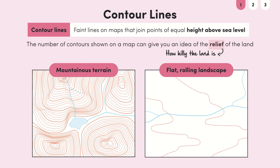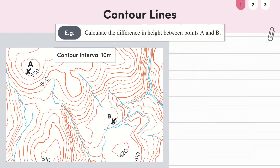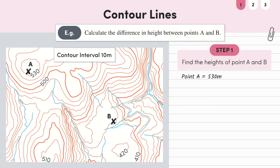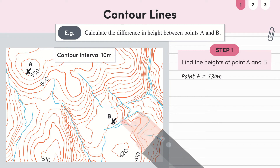To calculate the difference in height between two points such as A and B here, you can read off the contour lines. A is clearly 530 meters above sea level. If you follow the 410 meter line round you can see that point B lies one contour line above the 410 meter line.